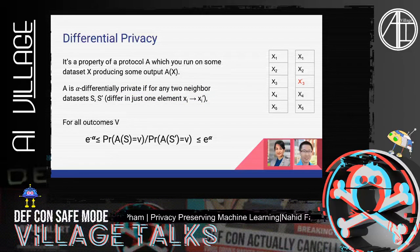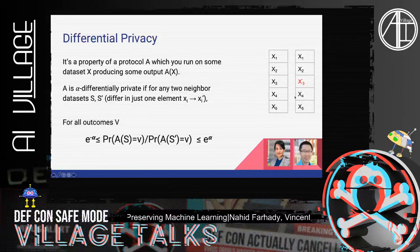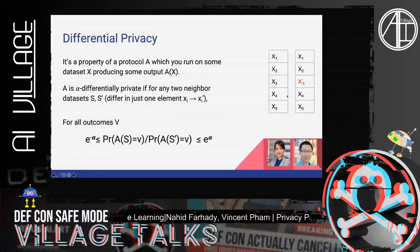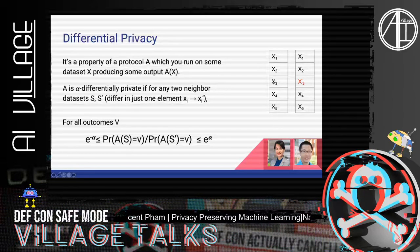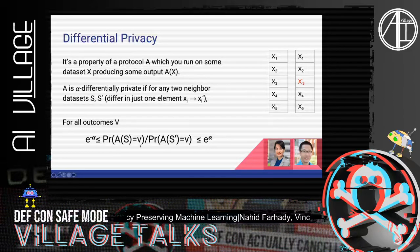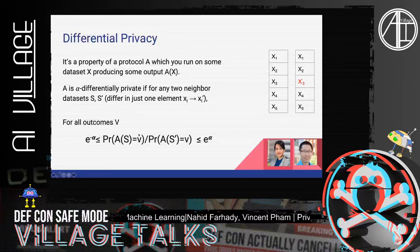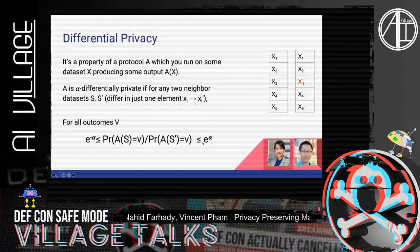Looking again at differential privacy: we have two datasets called neighbor datasets, where all features in both datasets are equal except one feature — in this case x3 and x3 prime. We want to make sure that when we change the input from x3 to x3 prime, the output generated by the model changes minimally. The probability of generating a specific output in the first case versus the second case is minimal, or epsilon.